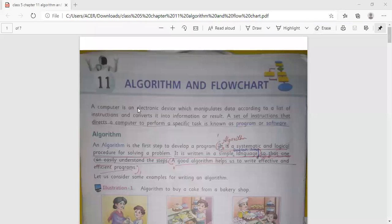Good morning students. Today we will read Chapter 11, Algorithm and Flowchart. A computer is an electronic device which manipulates data according to a list of instructions and converts it into information or results.